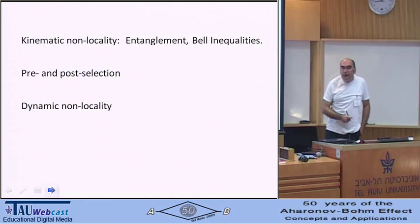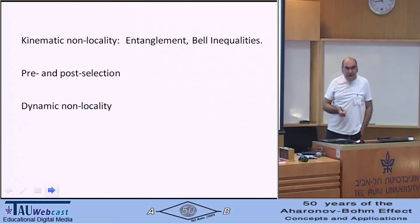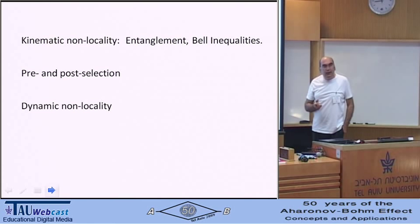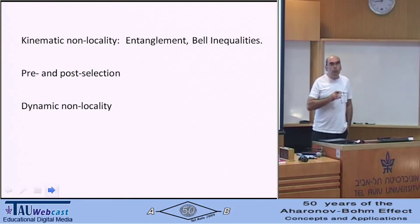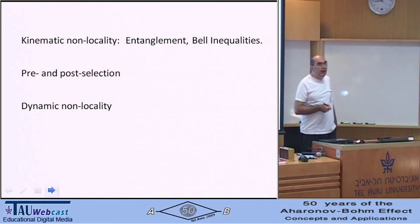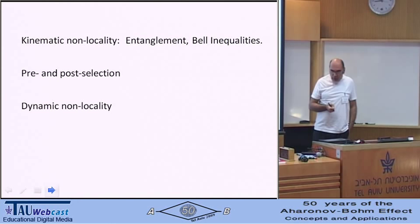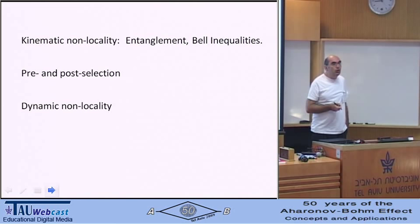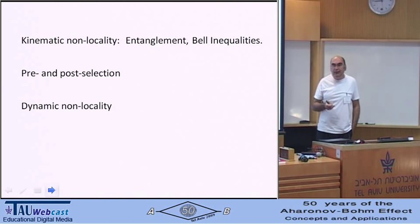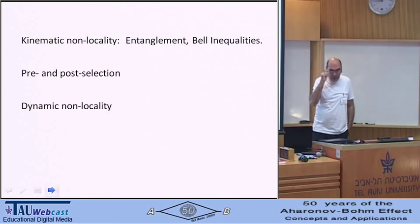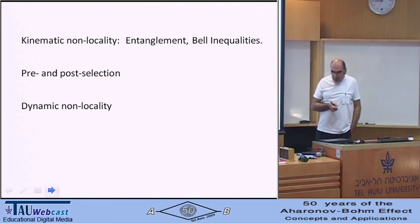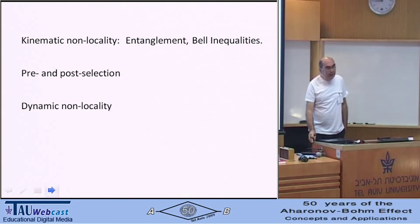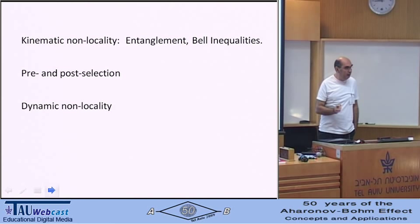And the third one is dynamic non-locality, the subject I wanted to talk about. And this is related to the Aharonov-Bohm effect. Now, we've heard many absolutely wonderful talks about the AB effect. We saw experimental realizations, we see these beautiful interference patterns. Interference patterns that are intricate, they are, well, they are beautiful in a mathematical sense. And we also saw that these interference patterns are not only in quantum mechanics, but they appear in classical mechanics, as beautifully shown by Michael Berry.